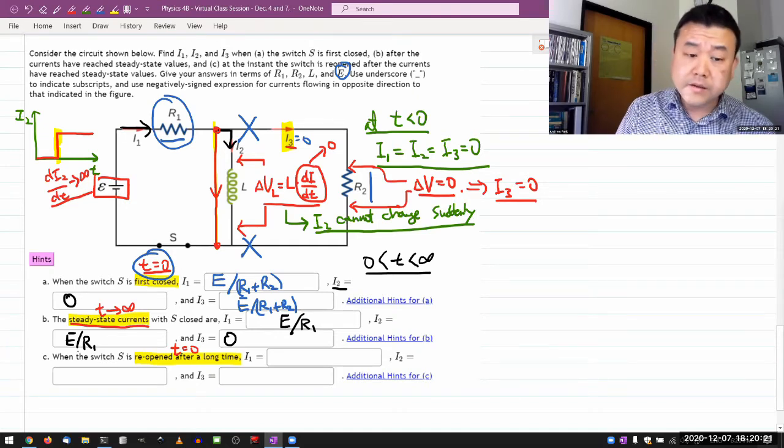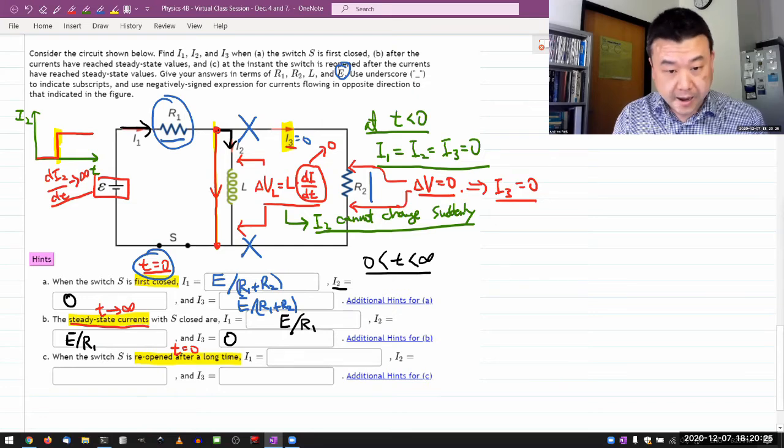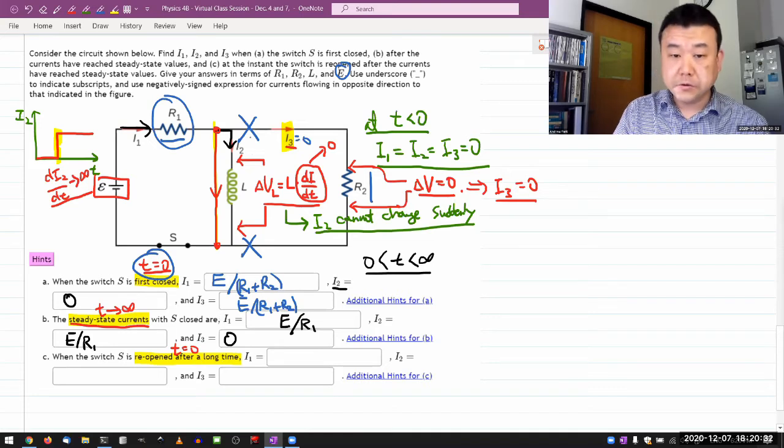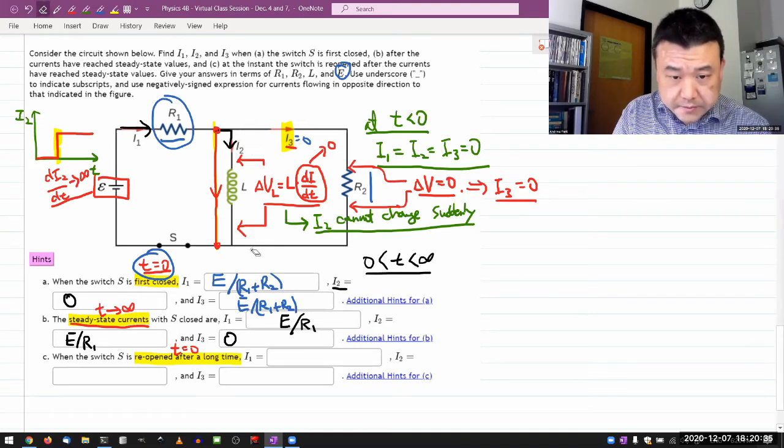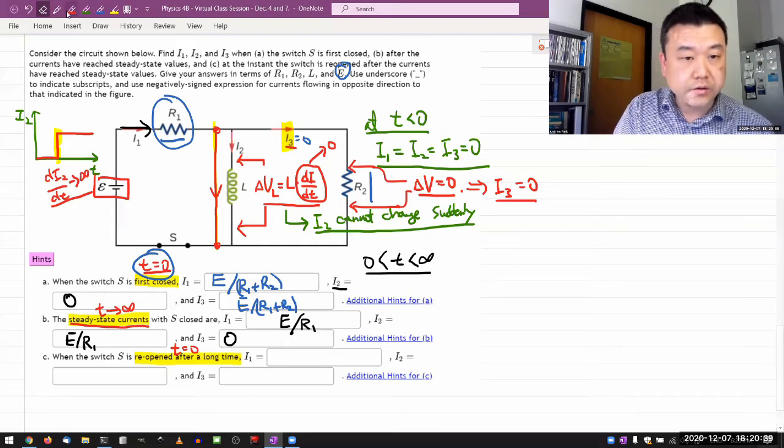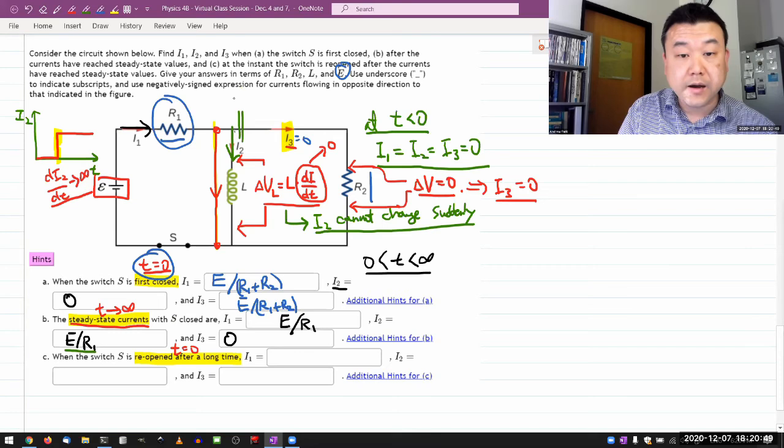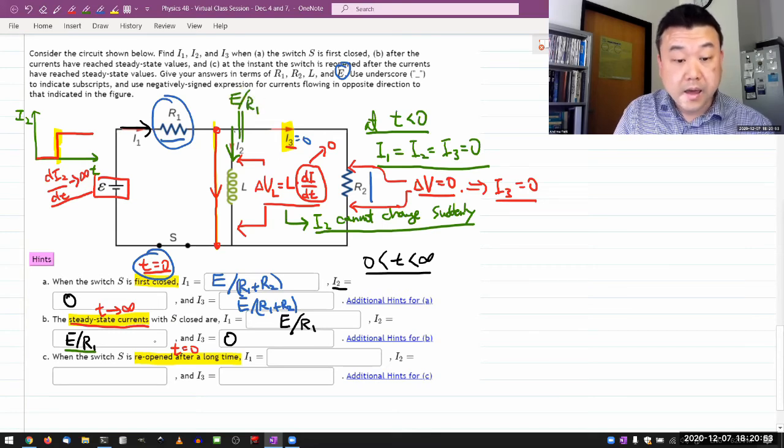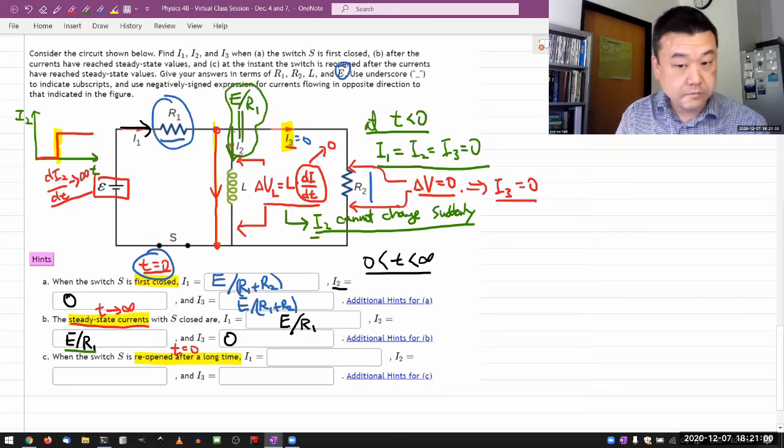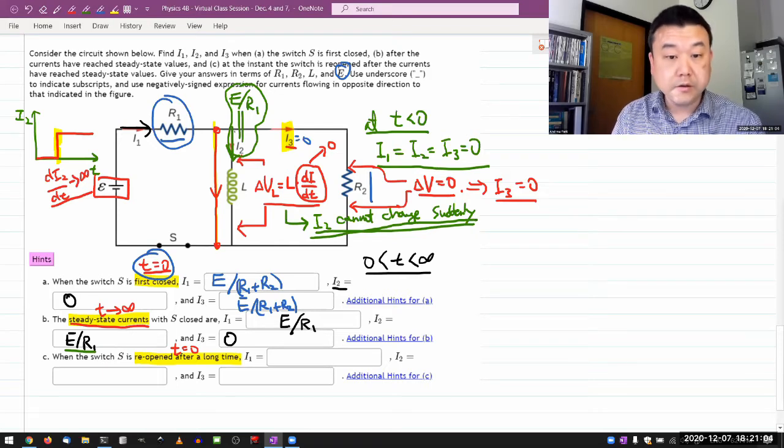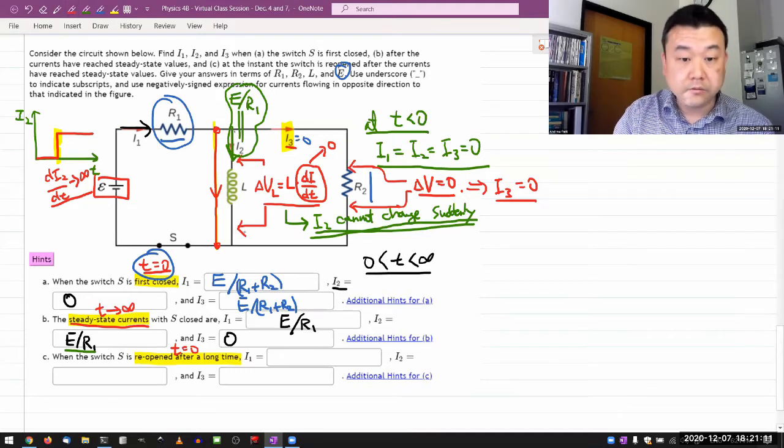And finally, Part C, when it says the switch S is reopened after a long time. So this is what you should consider. Your initial condition, the starting point is that for this I2, you have a value of I2. That's going to be what you have here. That's the steady state current you have for I2, E over R1. And when this switch is reopened, its current has to remain the same because I2 cannot change suddenly. That's the property of inductor. So that's the one kind of fixed point that you can use in filling in the rest of the gap.